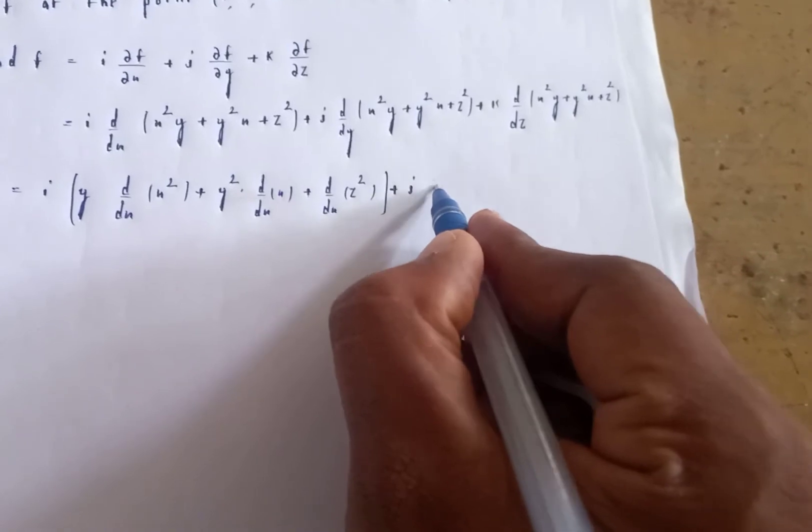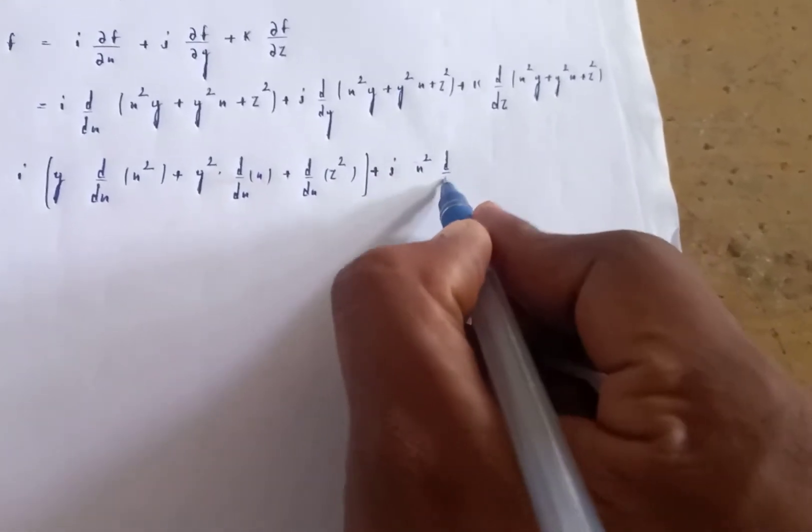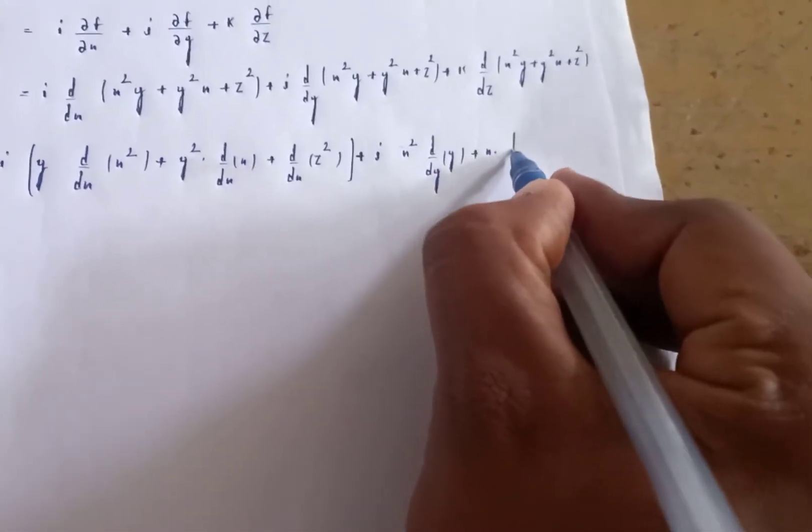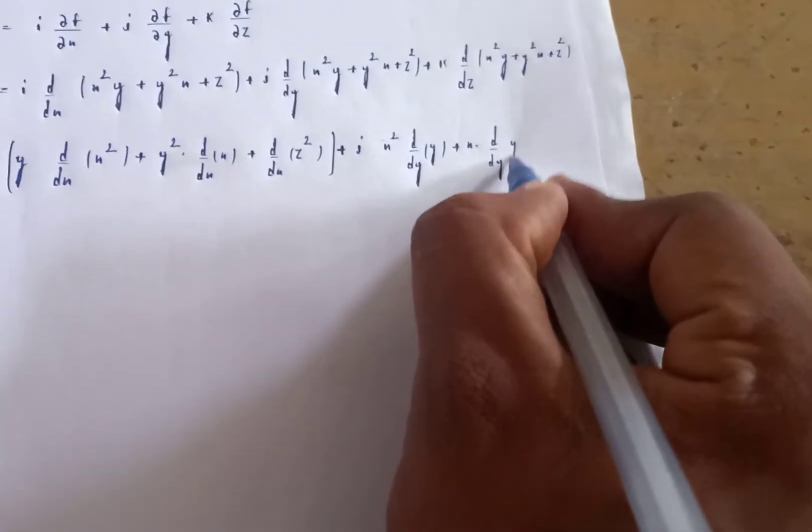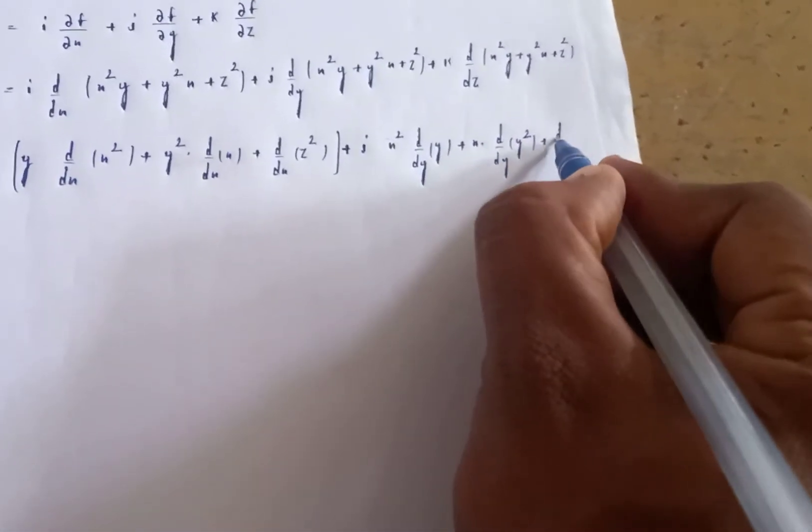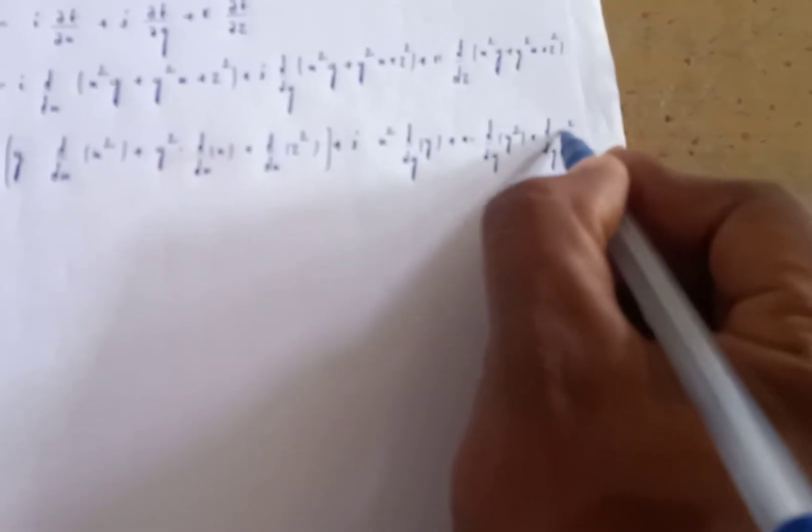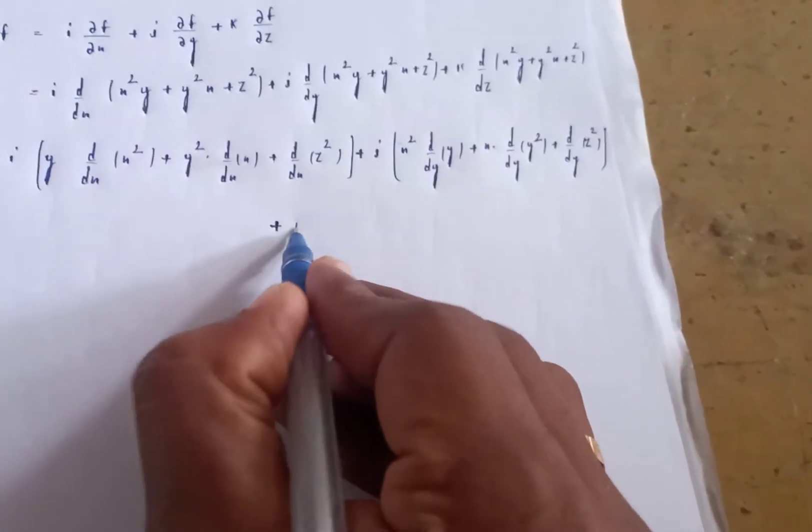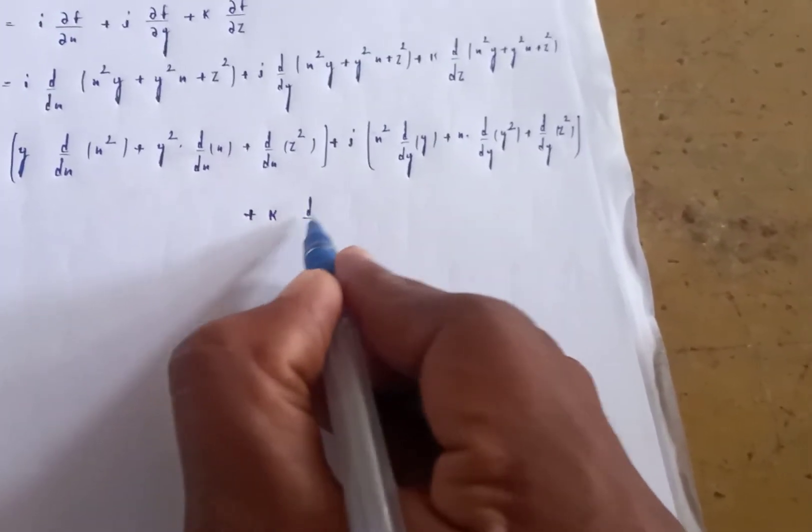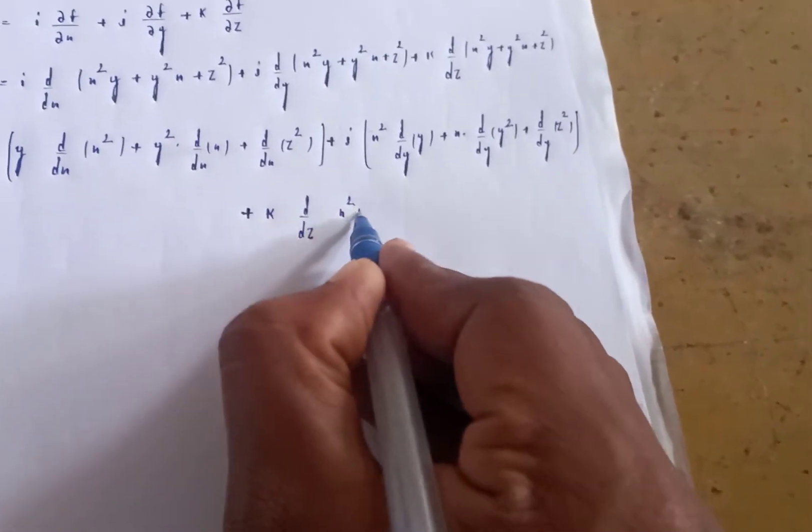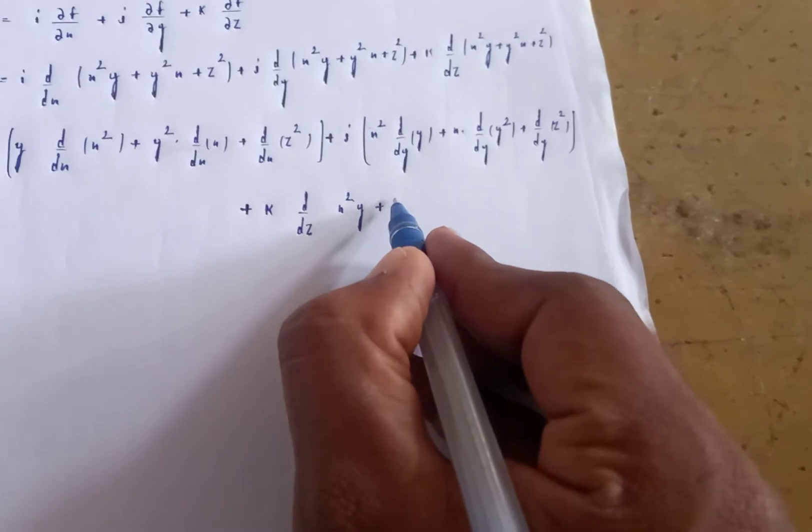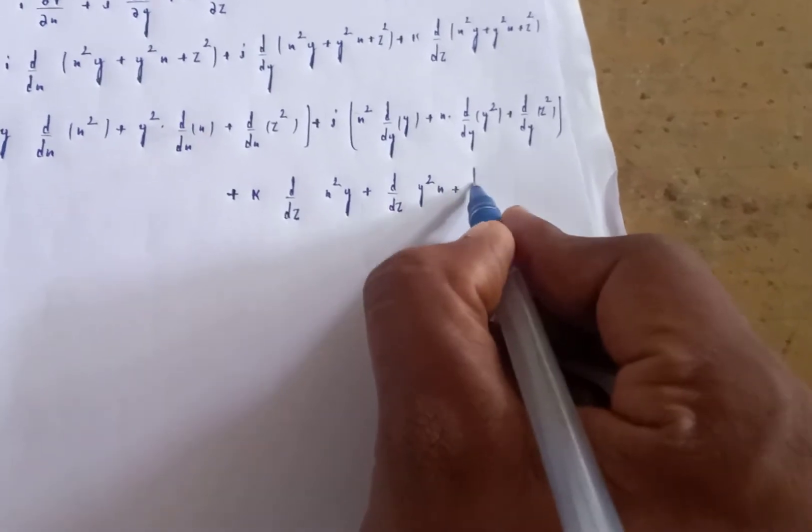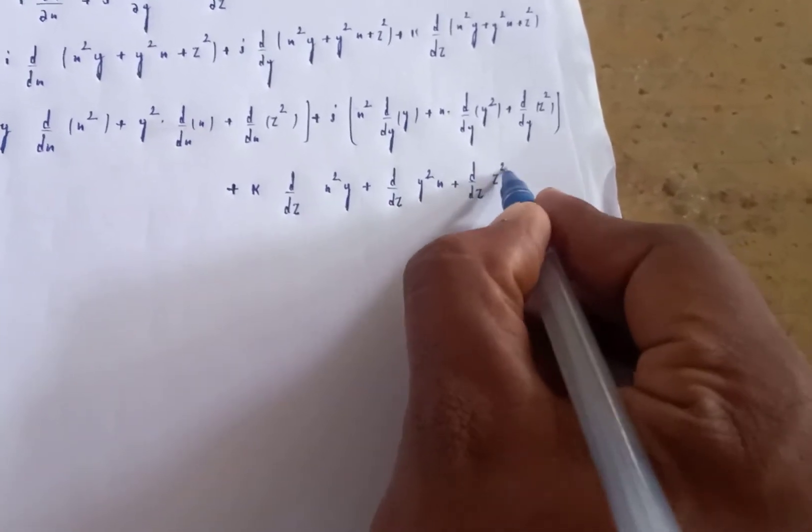Plus j of x² is constant so d/dy of y gives 1, plus x times d/dy of y² gives 2xy, plus d/dy of z² is 0. Plus k times d/dz of x²y is 0, plus d/dz of y²x is 0, plus d/dz of z² gives 2z.